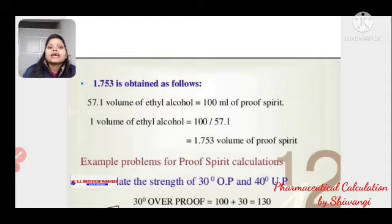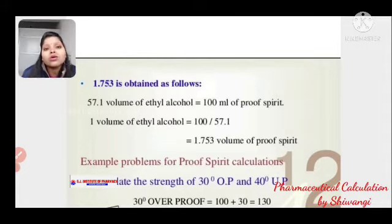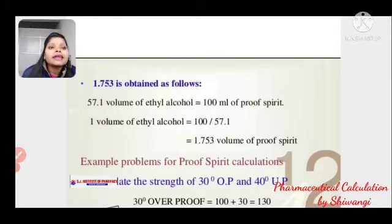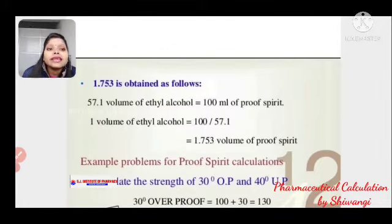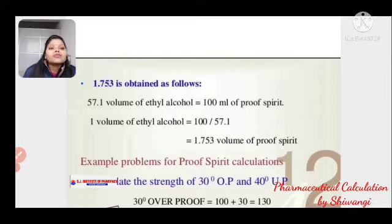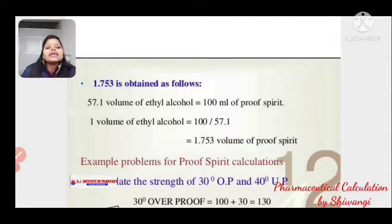57.1 volume of ethyl alcohol is present in 100 ml of proof spirit. So for 1, it becomes 100 upon 57.1, which gives 1.753 volume of proof spirit — hence the factor 1.753.